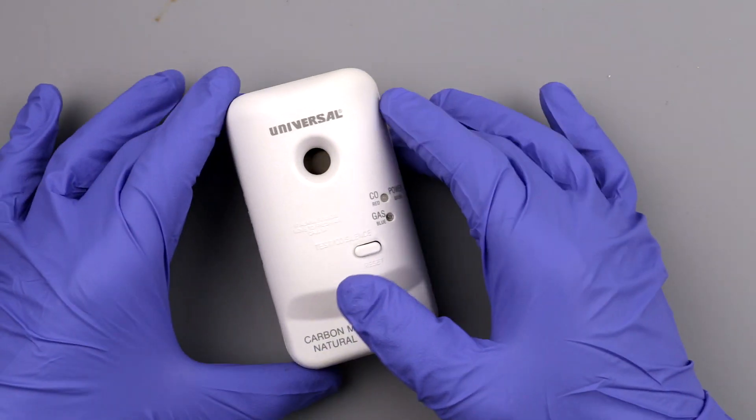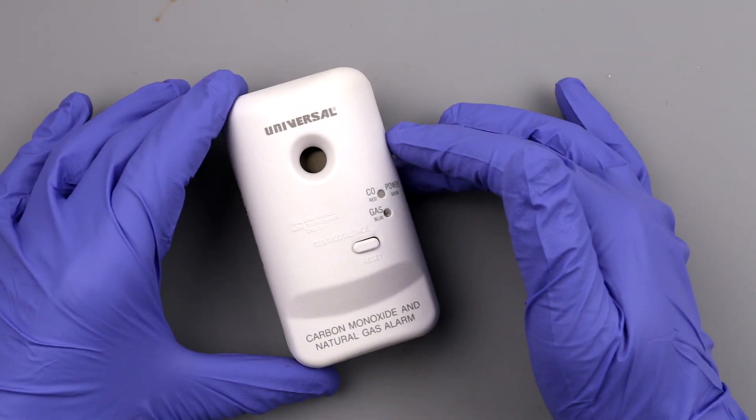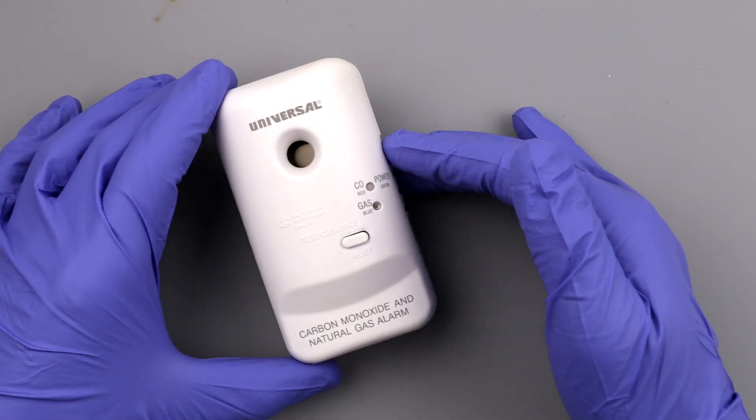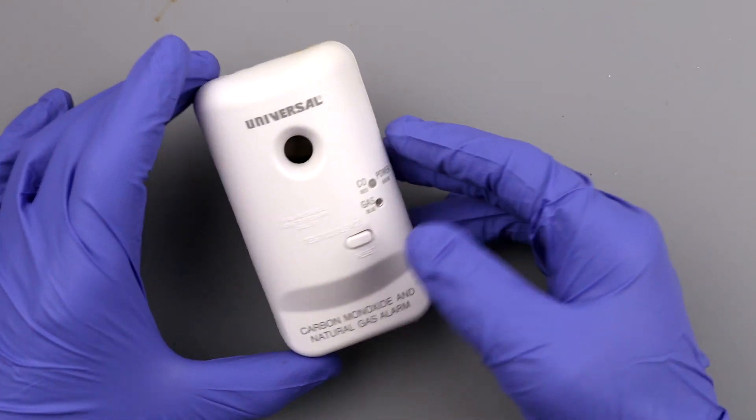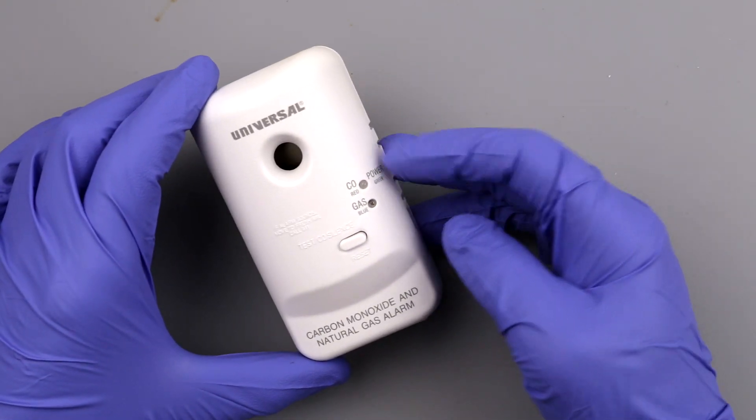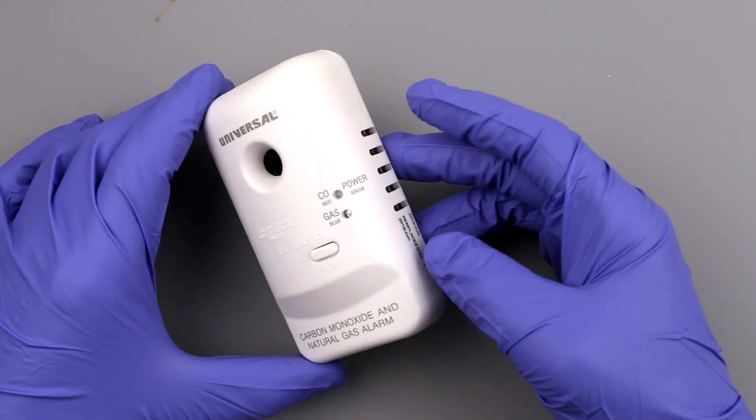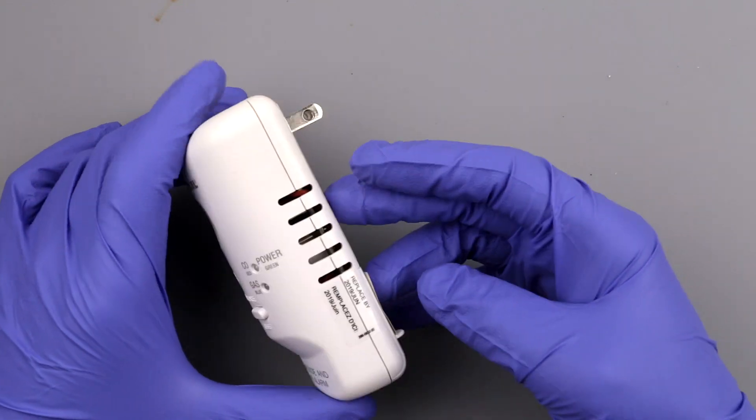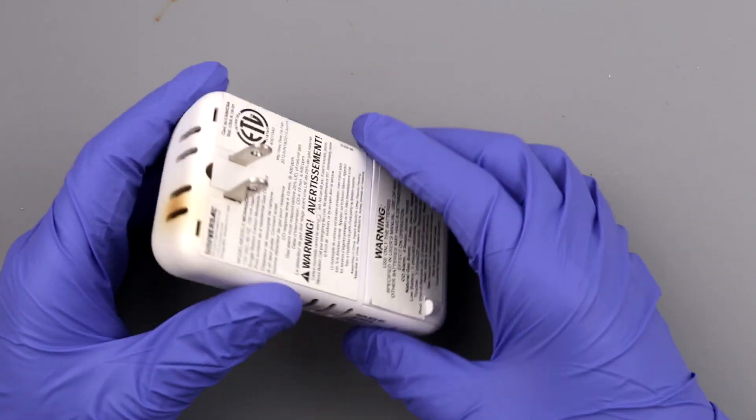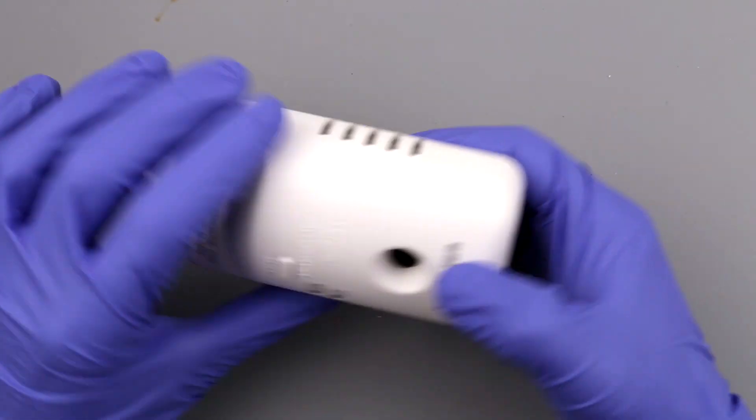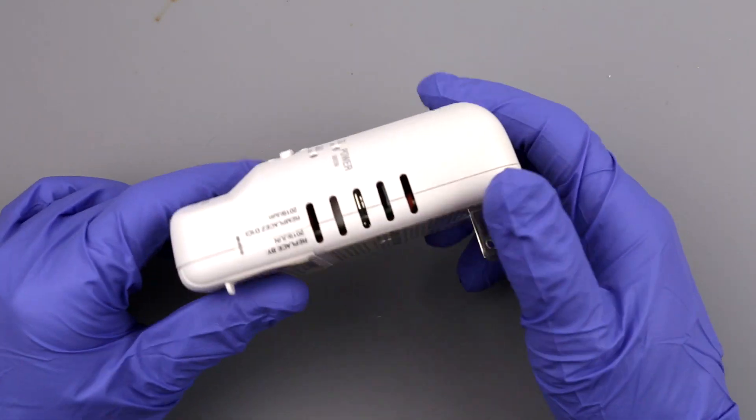Hello my friends, today we have some sort of noise offender which didn't let me sleep another night. This is a Universal CO and natural gas detector. This thing suddenly started beeping in the middle of the night and I couldn't figure out what the hell was beeping and where it was.